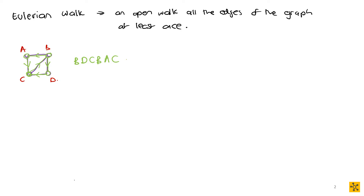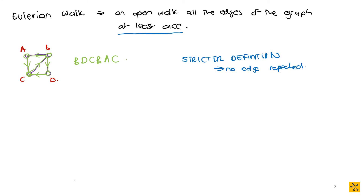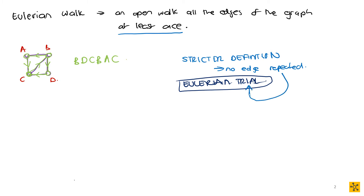In some contexts there is a stricter definition for the Eulerian walk, where you don't actually repeat edges — making it more like a trail with no edge repeated. So in some works and with some authors, what you would think of as an Eulerian trail they'll refer to as an Eulerian walk, because a trail is basically a walk with no edges repeated. The example given is both an Eulerian trail and an Eulerian walk.